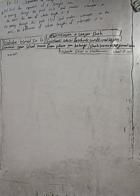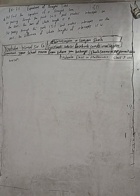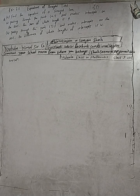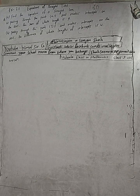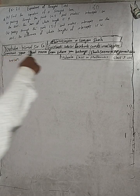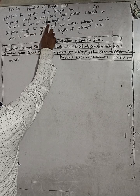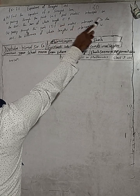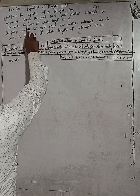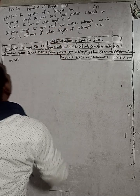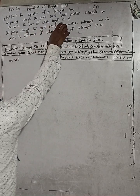Hi class 9 and 10 students, welcome back to Vimal Sharjee YouTube channel. This is question number 10a, exercise 7.2, equations of a straight line, class 9 OPT maths. The question is: find the equation of a straight line passing through the point and makes intercepts on the axis the sum of whose length is 9.